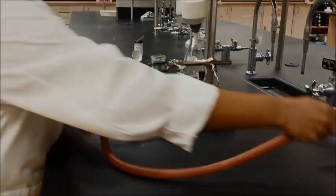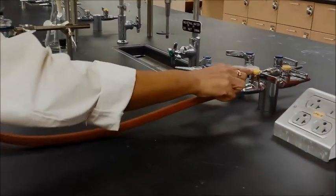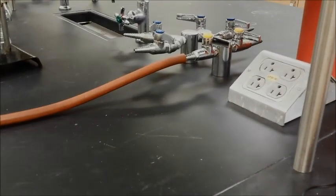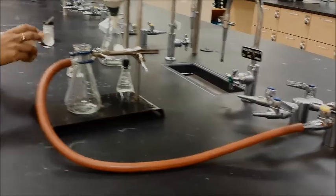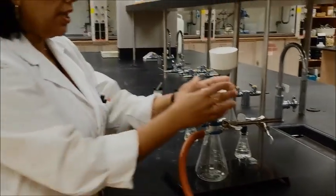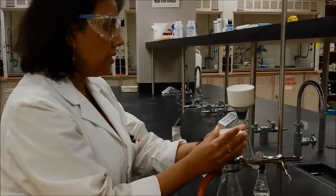So, you need to put the vacuum tube in here and then the vacuum tube right here in the vacuum outlet. Once that's set, then you can go ahead and set in your Buchner funnel.